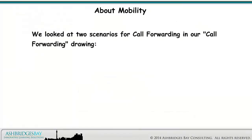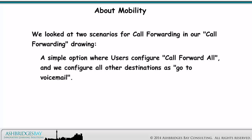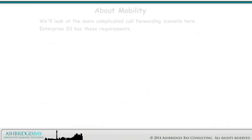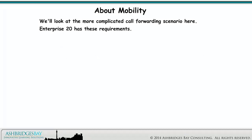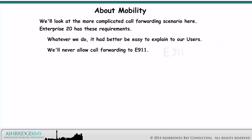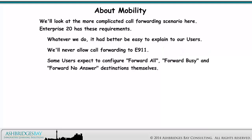We looked at two scenarios for call forwarding in our call forwarding drawing: a simple option where users configure call forward all and we configure all other destinations as go to voicemail, and a more complicated scenario with additional requirements for user self-service configuration and additional destinations. We'll look at the more complicated call forwarding scenario here. Enterprise 20 has these requirements: whatever we do, it'd better be easy to explain to our users. We'll never allow forwarding to E911. Some users expect to configure forward all, forward busy, and forward no answer destinations themselves.